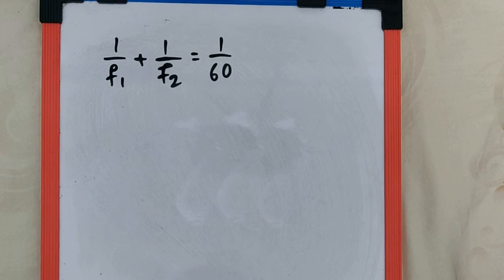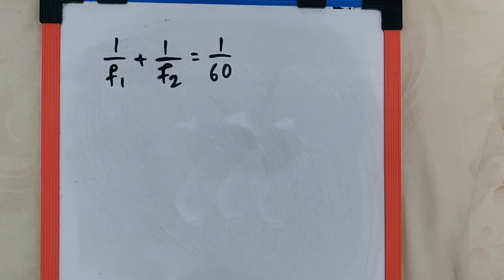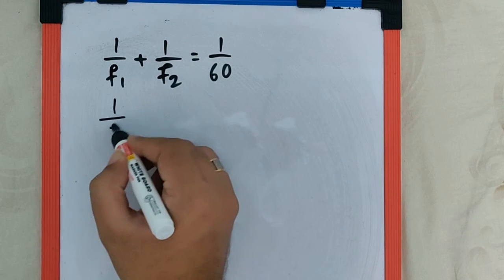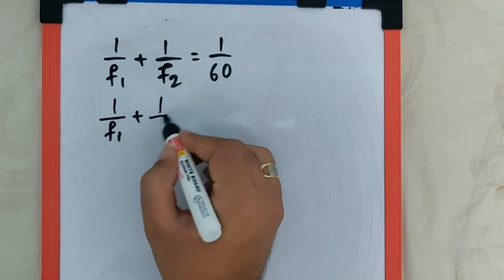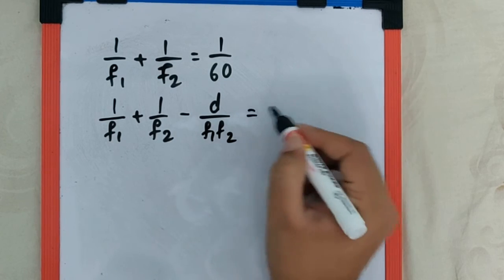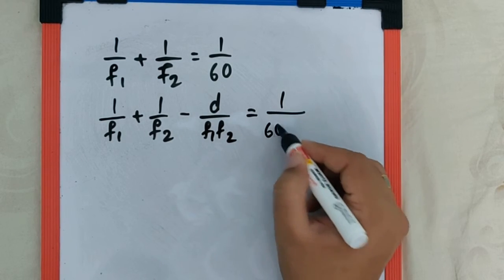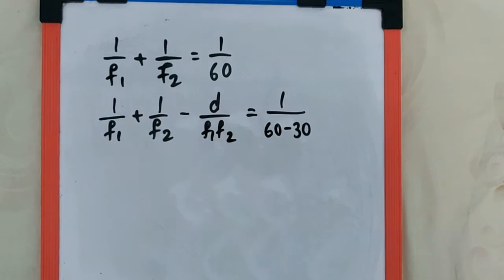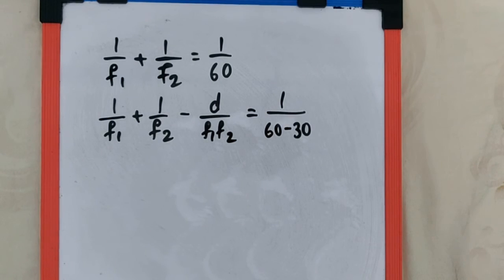Further, the question says the position of this image shifts by 30 cm towards the combination when the two lenses are separated by 10 cm. That means 1/f1 + 1/f2 − d/(f1·f2) = 1/60 − 30, because initially it was at 60 and it shifted by 30 towards the combination, so it becomes 60 − 30 = 1/30. We are supposed to calculate f1 and f2, where d is given as 10 cm.